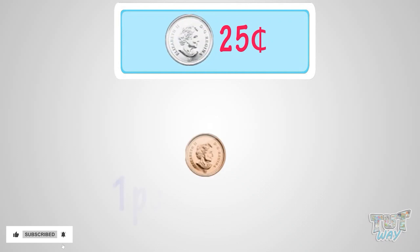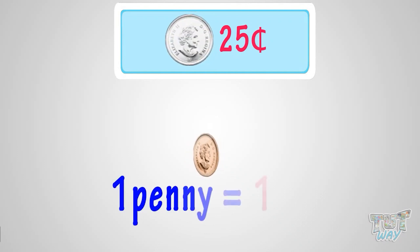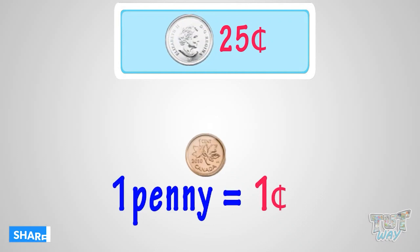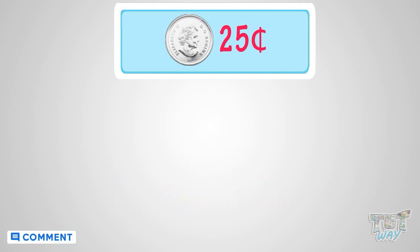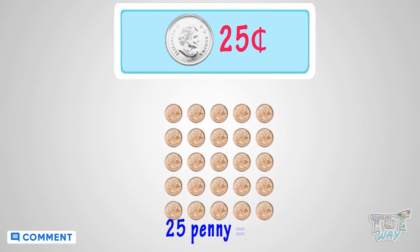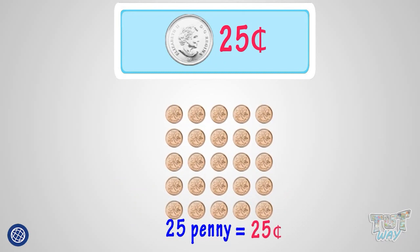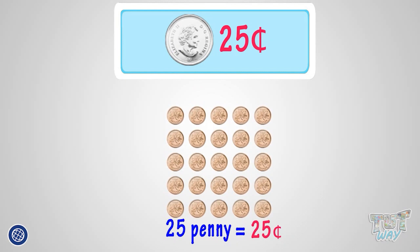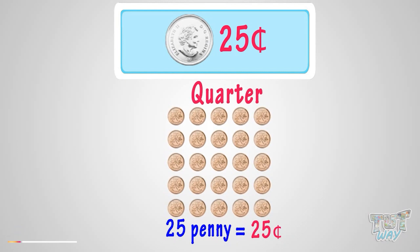One way is 25 pennies. As one penny is one cent, so 25 pennies make 25 cents. So you can exchange 25 pennies for a quarter.